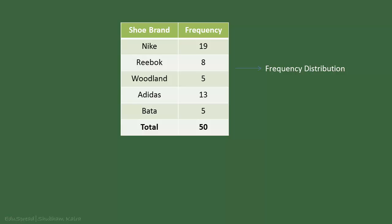By looking at this table, we can see that if we talk about popularity, then Nike is the leader, Adidas is second, Reebok is third and Bata and Woodland are fourth. No doubt, this table offers more insight than the original data that I had shown earlier.